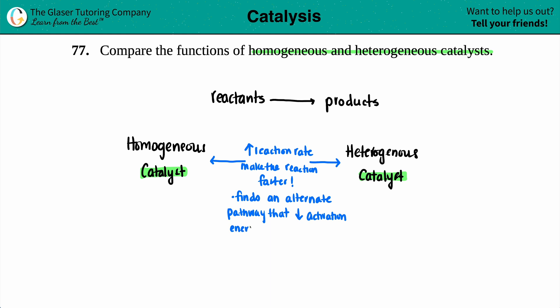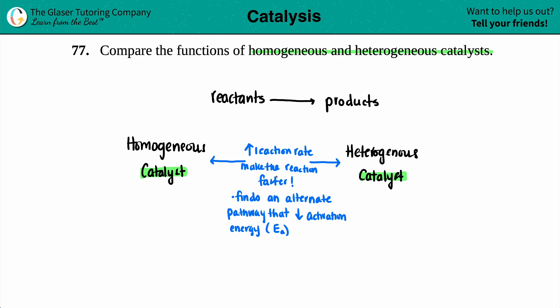That alternate pathway lowers something called the activation energy, represented as Eₐ. The activation energy is the highest amount of energy needed for your reactants to reach the transition state. High energy means instability, so by lowering the energy needed to convert over to your products, the reaction is going to be much quicker. If you can find a pathway with a lower activation energy, that reaction is going to be faster. These are the similarities.